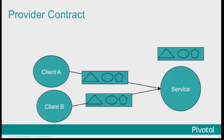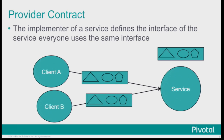I have client A and client B calling it, and they call the service and get back the whole thing. Now if we look at it from the point of view of the provider, you're giving back all these things. The implementer of a service defines the interface. Everyone uses the same thing. This is the world we live in typically when we build APIs — we're thinking about it from the point of view of the provider.